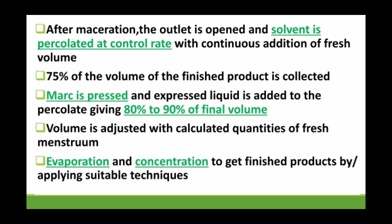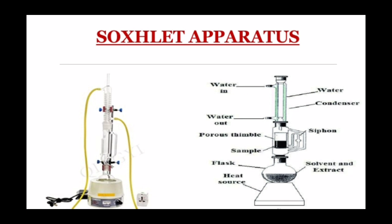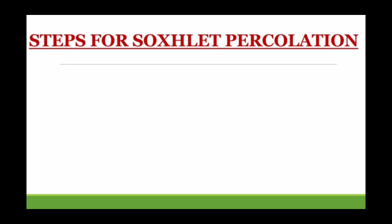The Soxhlet apparatus is commonly available in the pharmacognosy lab. It has different parts: a water inlet and outlet, a water condenser, a siphon, a porous thimble, a sample chamber, and a heat source. This apparatus is used for small-scale extraction through percolation.